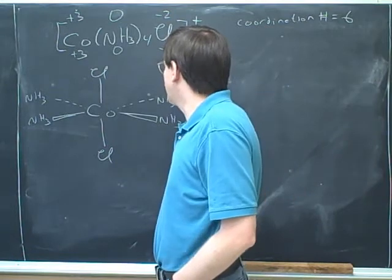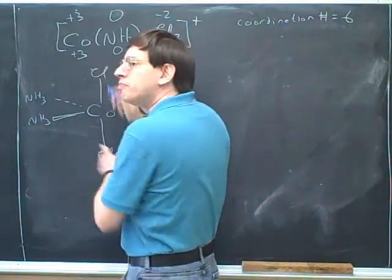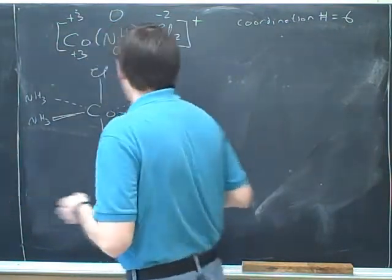Now, what is the angle between these two chlorines? 180. Good. But you notice that there's another isomer with a different angle. So you drew both of the isomers, which was good.